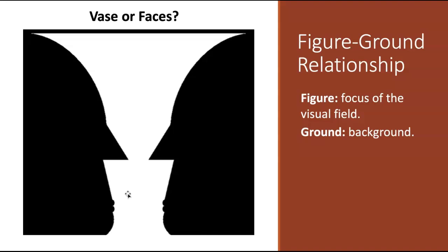In real life, we usually see things with a definite shape or form as the figure, and then the ground is usually something shapeless. So, for example, when you look at the sky, the clouds, which have a definite shape, are the figure, and then the sky is the ground. Or if you look at people in the street, the people are the figure, and then the street behind them is the background or the ground.